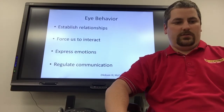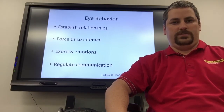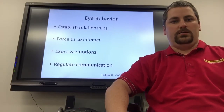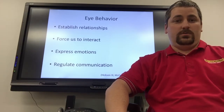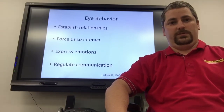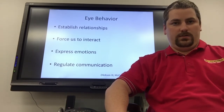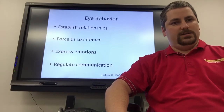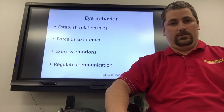Eye behavior is also used for four other things. Eye behavior is used to establish relationships. Relationships that are established start from eye contact. If you don't create eye contact with a person, it is very unlikely that you're going to be able to have a relationship with them. There may be a few exceptions — for instance, if you have a relationship on the internet with somebody, whether romantic or not, you may not have eye contact with them. Though once you do meet them in person, you'll need to make eye contact in order to have a good relationship.